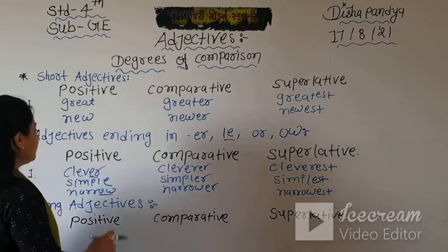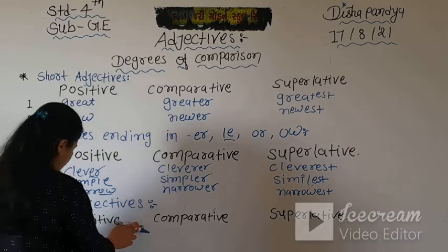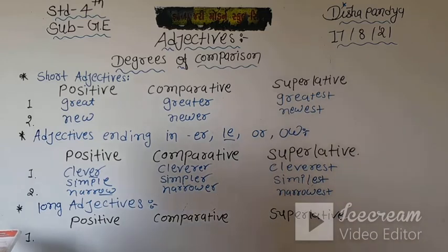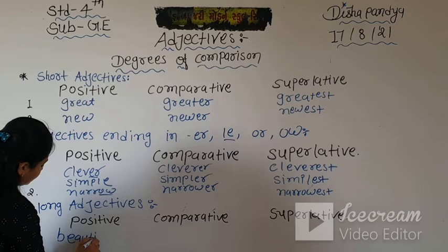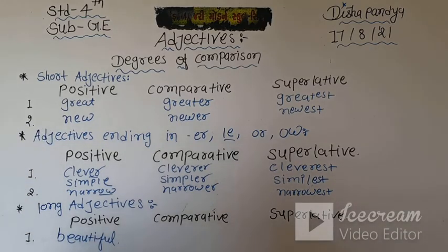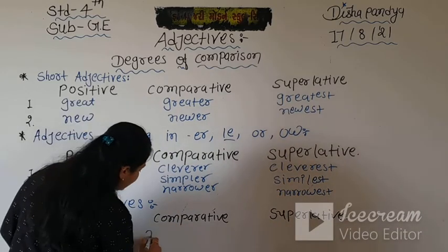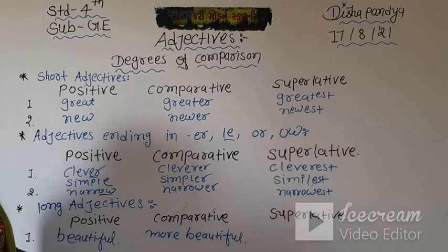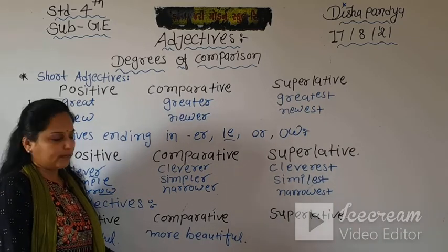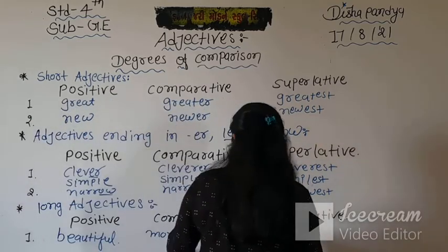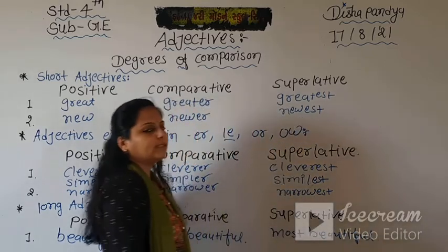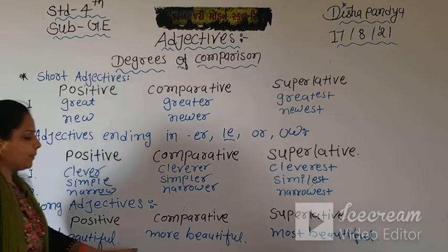Now long adjectives. When we transform long adjectives from positive to comparative or superlative, what transformation do we make? For example, the adjective 'beautiful': Kiran is a beautiful girl - positive. For comparative, we add 'more' before the adjective: Kiran is more beautiful than Sia. And for superlative, we add 'most': Kiran is most beautiful among all the girls. So positive, comparative, superlative for long adjectives use more and most.